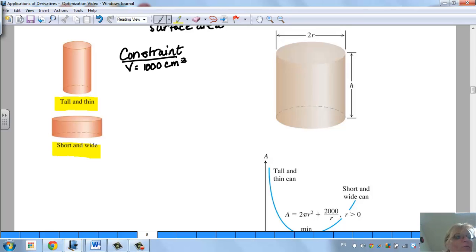Our constraint of this problem is the volume. That means the volume of this has to equal 1,000 cubic centimeters. In order to find the volume of anything, you're going to look at the area of the base and multiply it by the height. The area of the base is a circle.